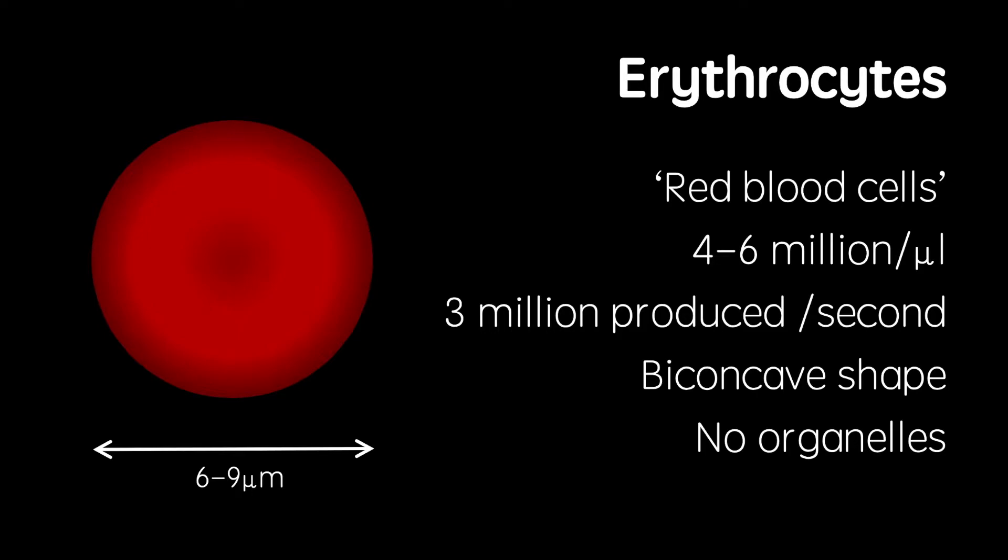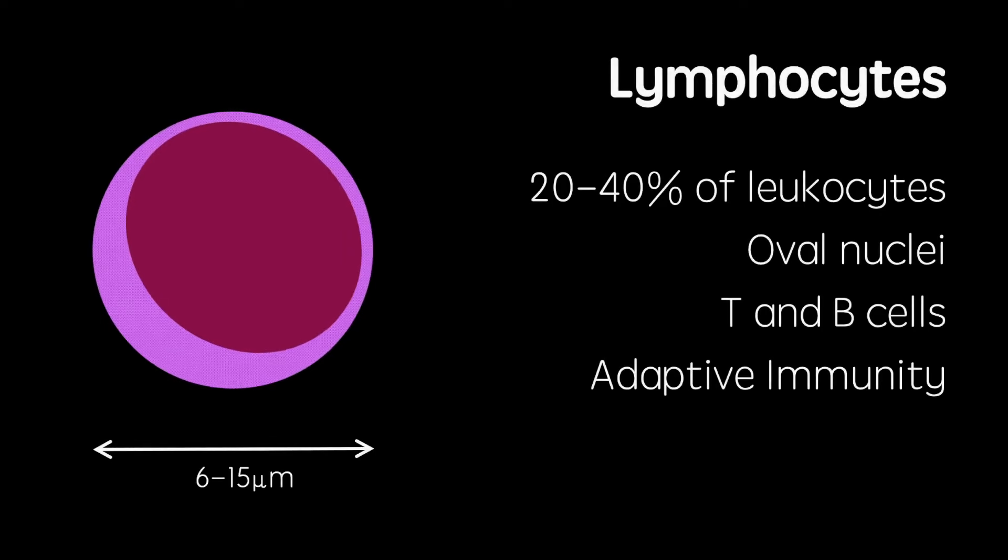White blood cells are separated into 5 types. Lymphocytes make up around 20 to 40% of these and are 6 to 15 micrometers wide. These cells feature a large oval nucleus and exist as either T or B cells of the adaptive immune system.